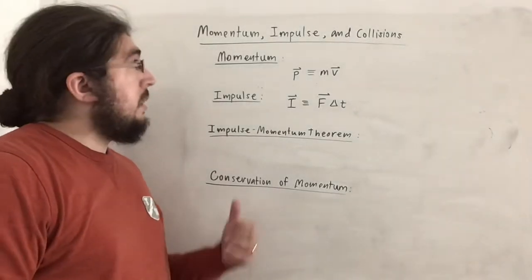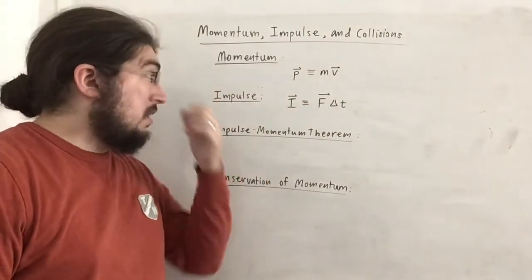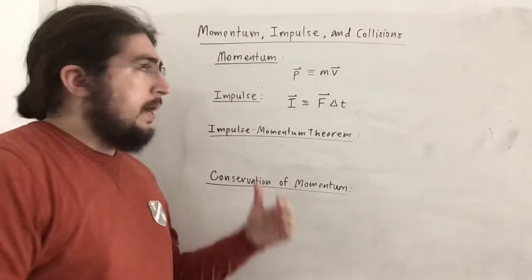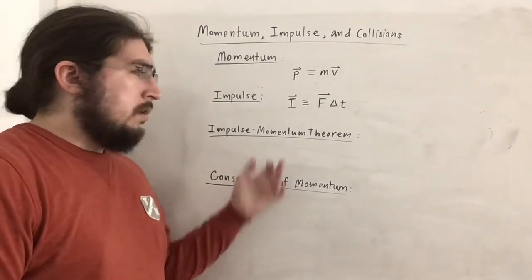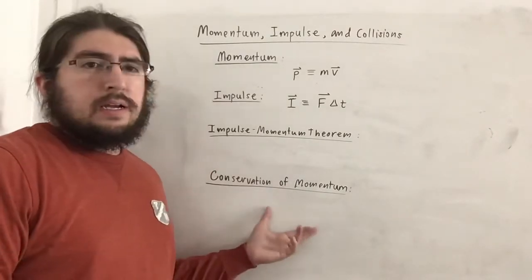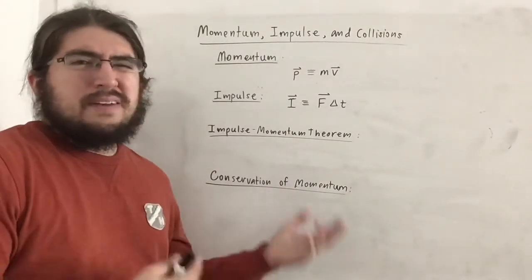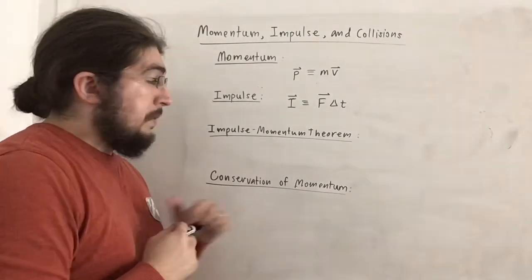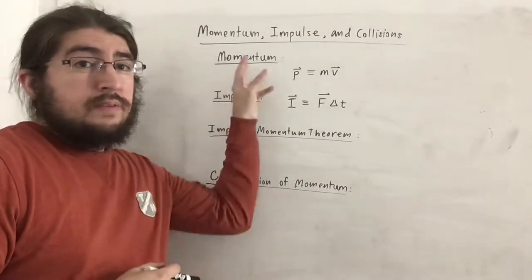Hello, everyone. Here we'll be talking about momentum, impulse, and collisions. First I want to get the ball rolling by defining momentum and impulse, and then we'll look at these two theorems — well, one's a theorem, the other is a conservation principle, basically. But they're both really theorems, and both are consequences of these definitions.